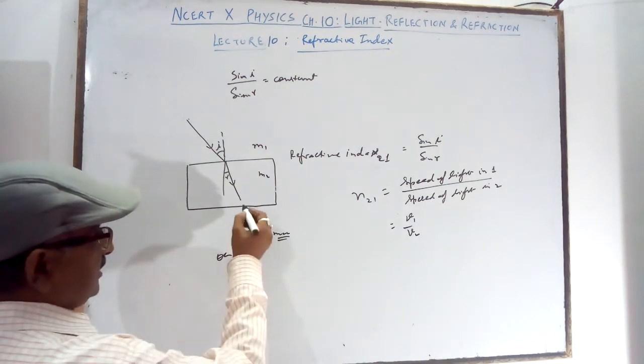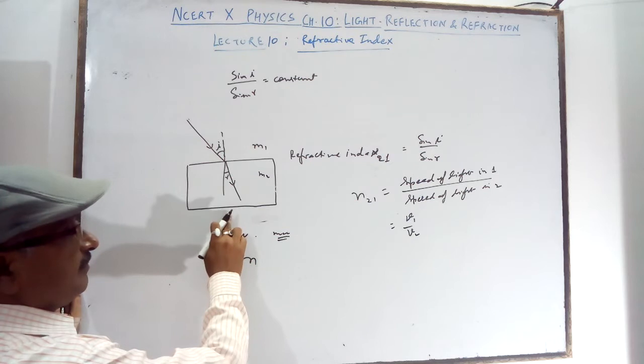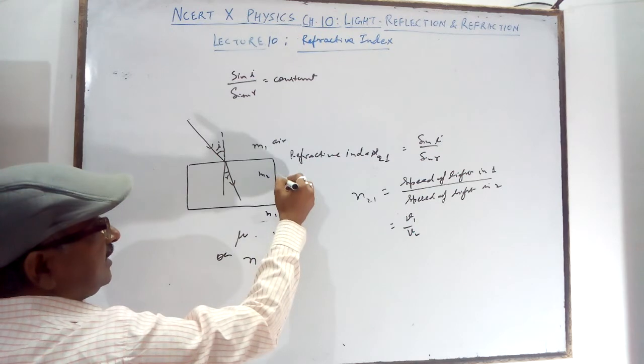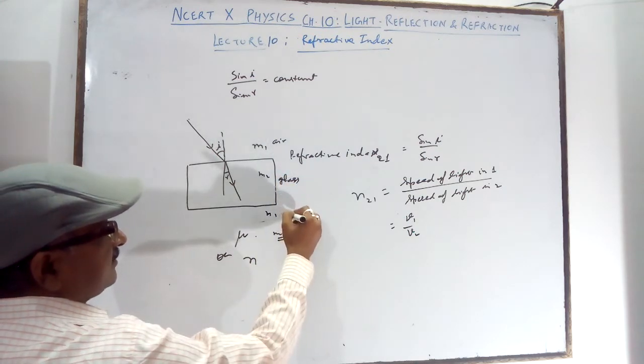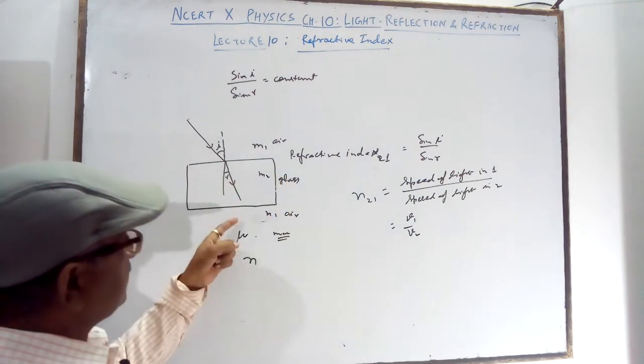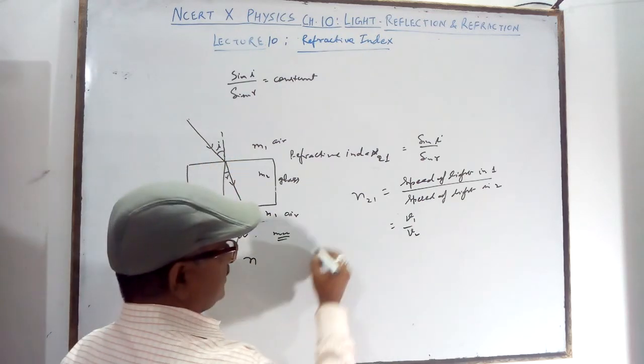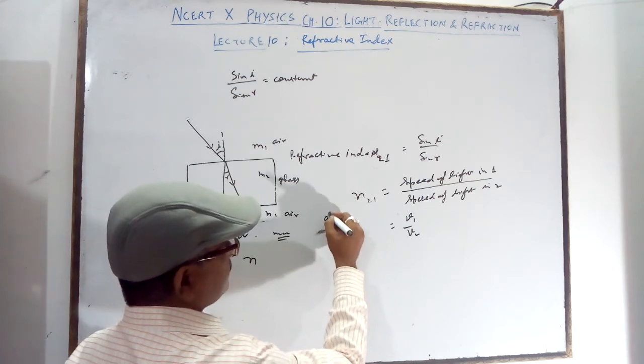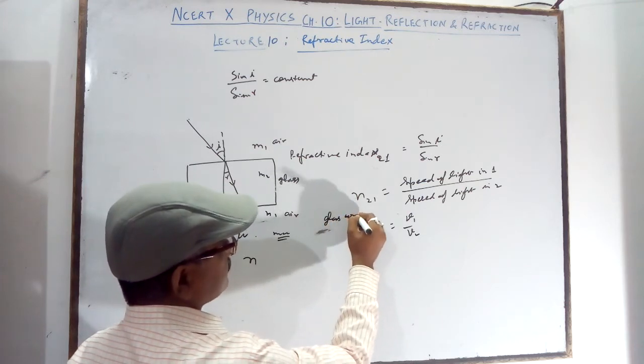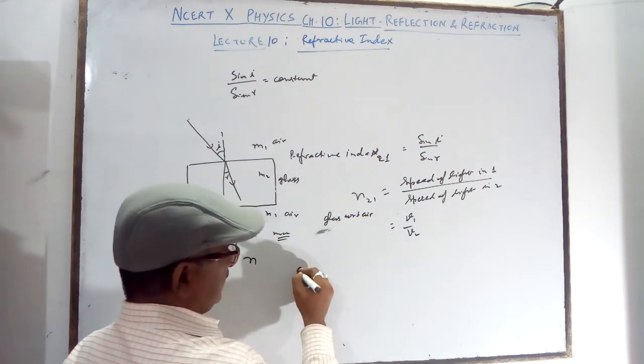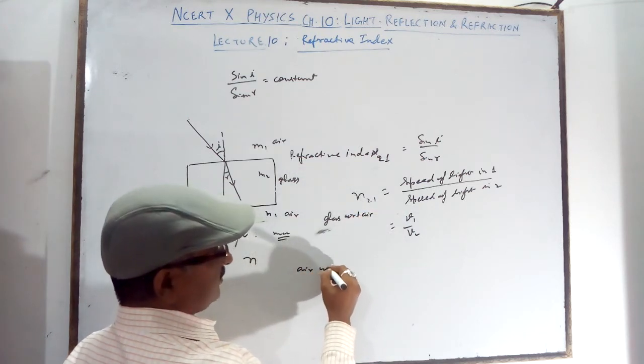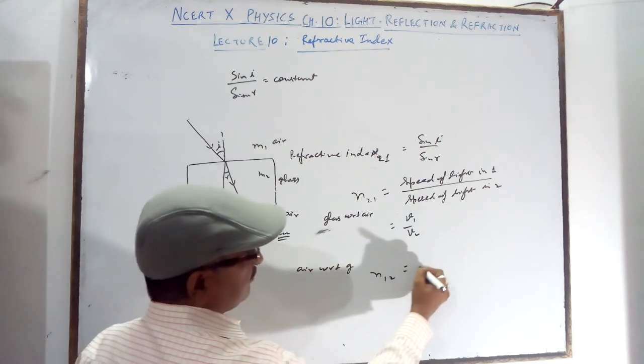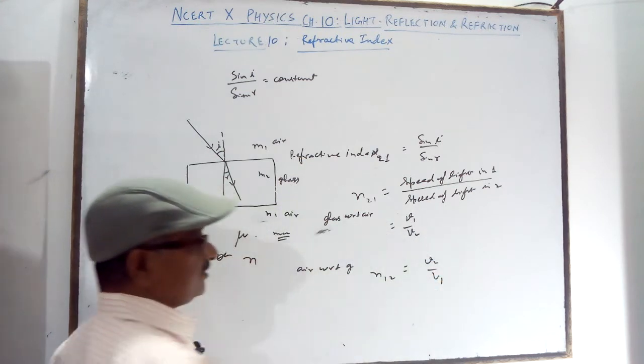Or if the light is coming out from 2nd medium to the 1st medium again. Here if it is air, then glass, and again air. So you can say air with respect to glass. Here glass with respect to air. With respect to glass means N12 will be V2 by V1.